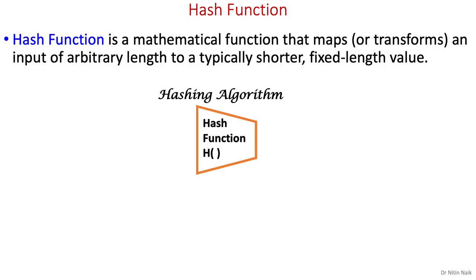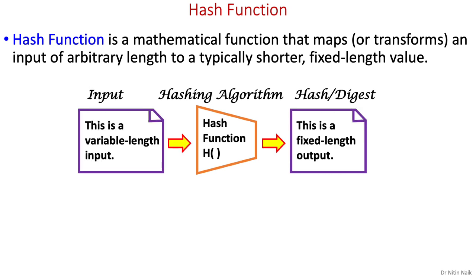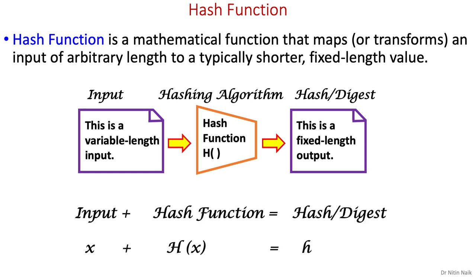We can start off with the hash function. It is a mathematical function that maps an input of any length to a typically shorter fixed-length value. We can also express this mapping process as an equation: H(x) = h, where x is an input value, uppercase H is the hash function, and lowercase h is the output value or hash.